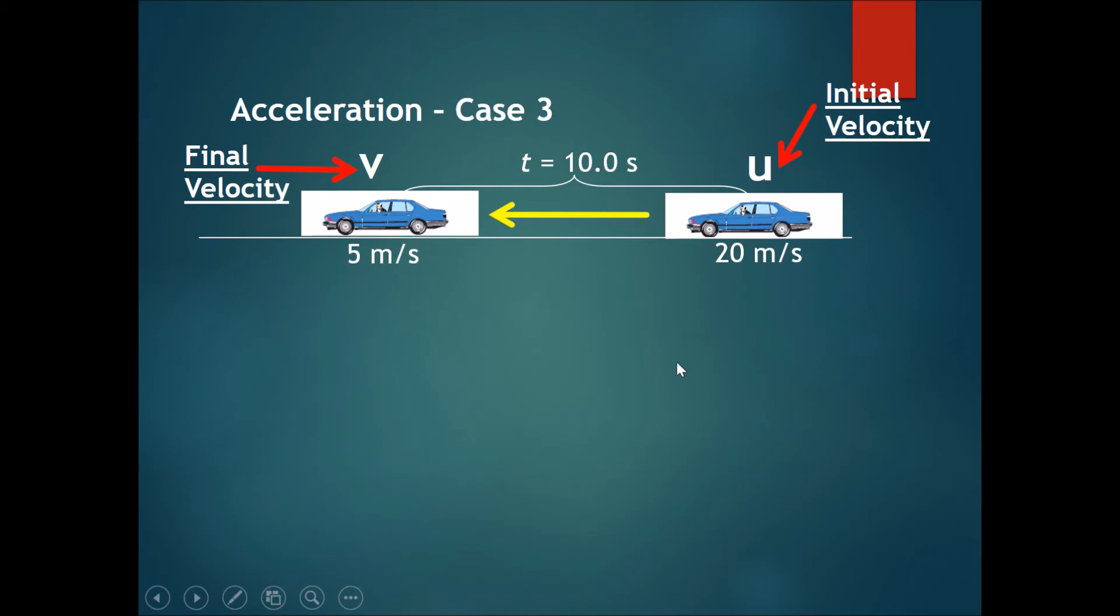Now we have the final case of acceleration when the car is initially at 20 meters per second. After that, we check the final velocity and it becomes 5 meters per second. And then once again, it takes 10 seconds to go from this speed to this speed. You can see now that the final speed is less than the initial speed. So how do we go about it? Same thing.